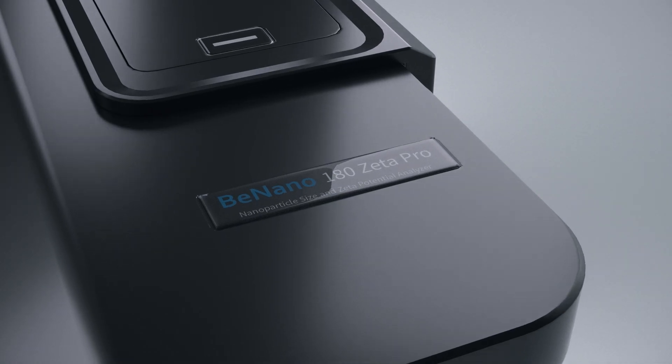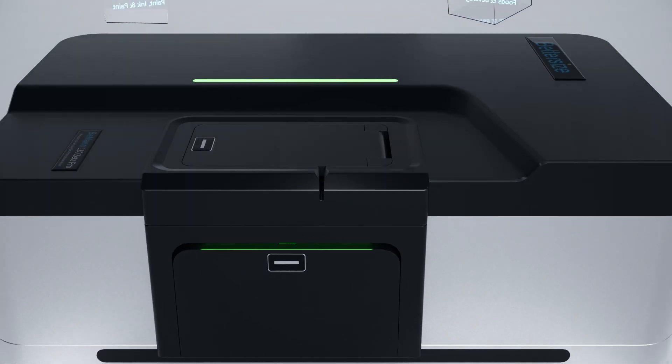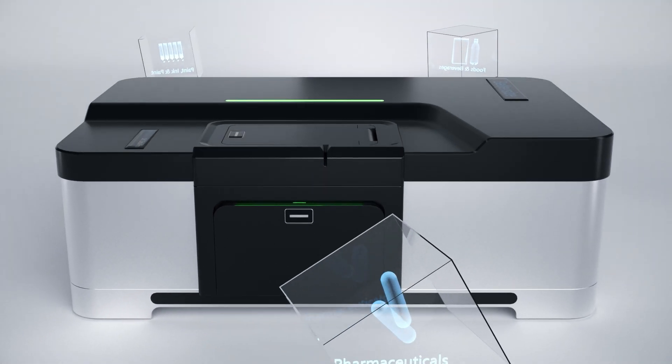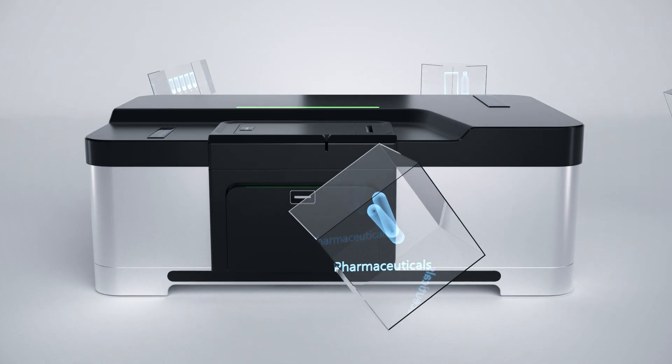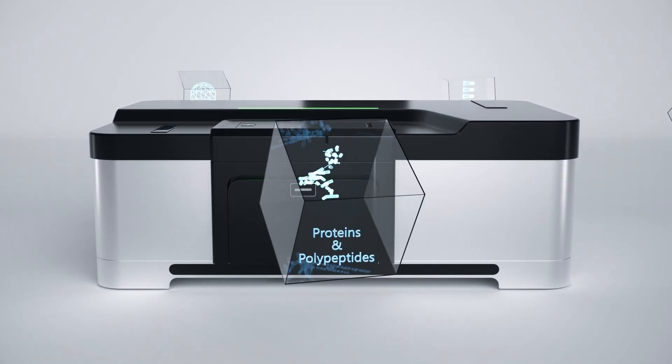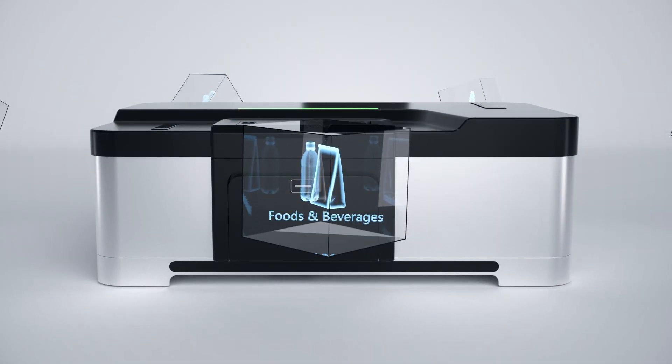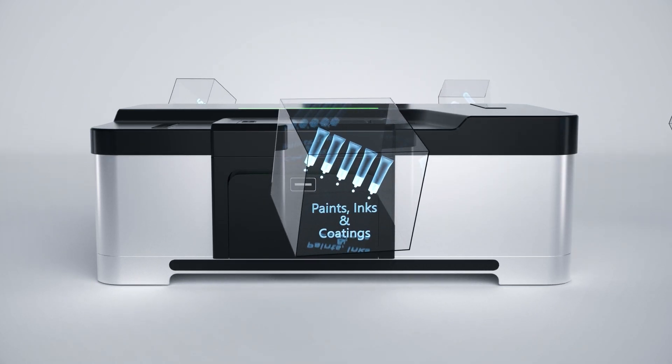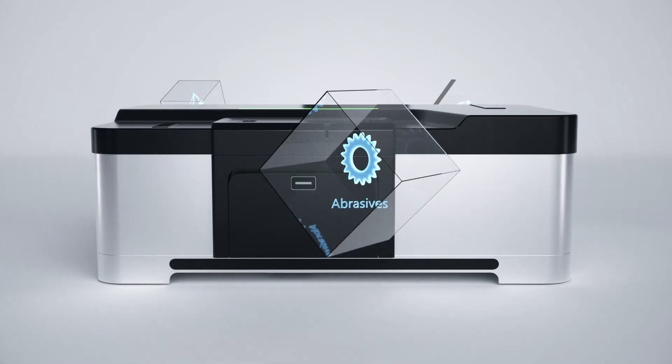B-Nano, as an ideal particle size and zeta potential analyzer, has been widely used for various areas, including pharmaceuticals, proteins and polypeptides, household chemicals, food and beverages, paints, inks and coatings, nanomaterials and abrasives.